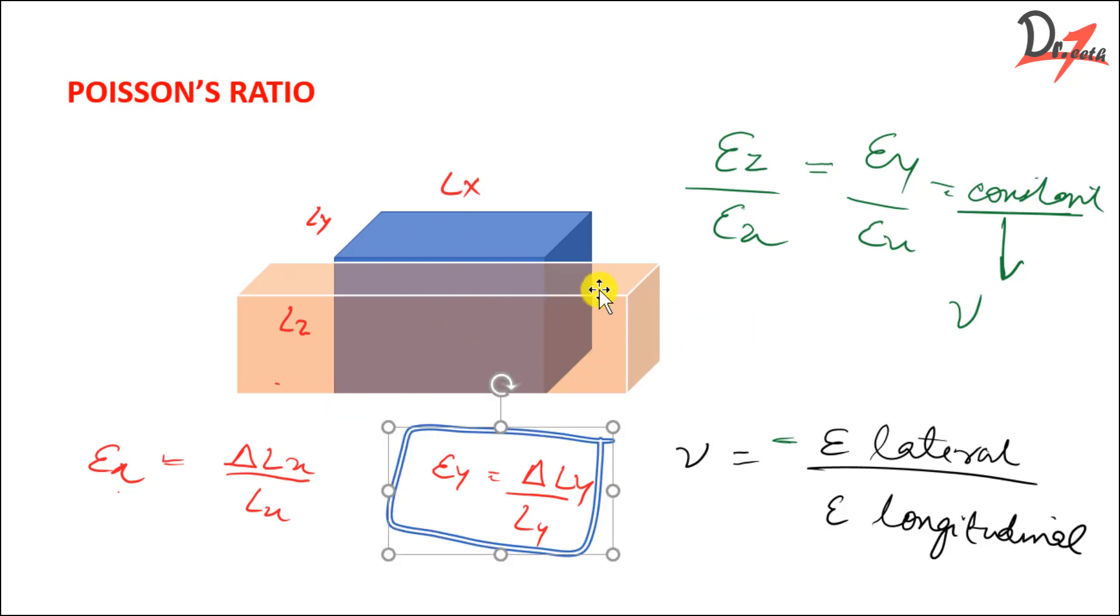Now the axis on which the force is applied is called the longitudinal axis and the axis which is perpendicular to this longitudinal is called lateral. So even this one is lateral and this one is lateral. We have three axes. So the other two axes which are 90 degrees to this longitudinal, they are the lateral axes.